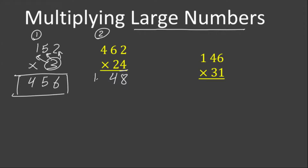4 times 4 is 16, plus 2 is 18 — write 8. Now move to the tens place. When we start multiplying the tens place, we write the answer under the tens place, not under the ones place. In order not to get confused, we write a zero under the ones place. 2 times 2 is 4. 2 times 6 is 12 — write 2 here and carry 1 above the hundreds place. 2 times 4 is 8, plus 1 is 9.